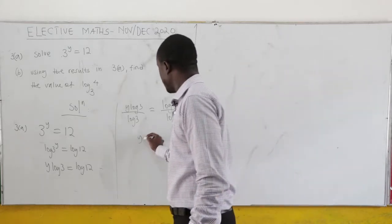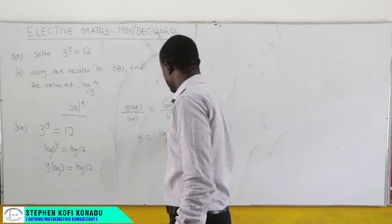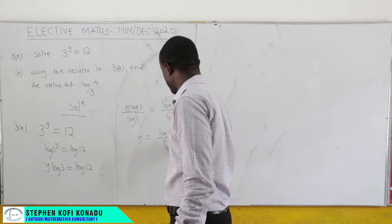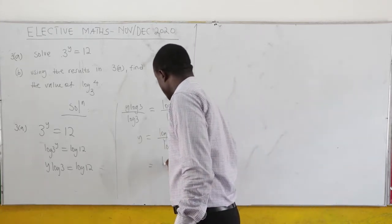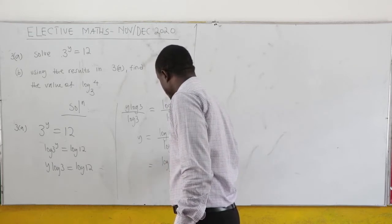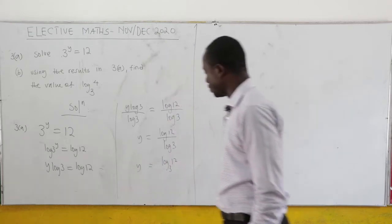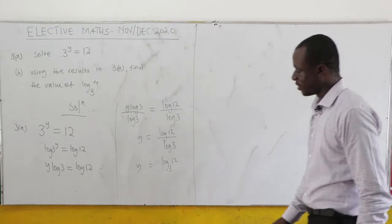So our y equals log 12 all over log 3. And this is the same as log₃12. When you do change of base, this is just log₃12.